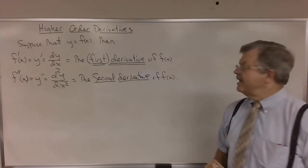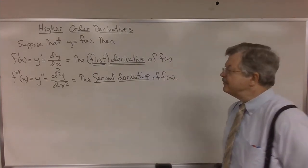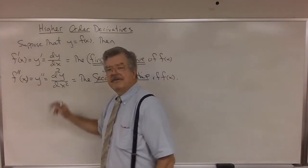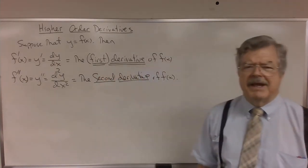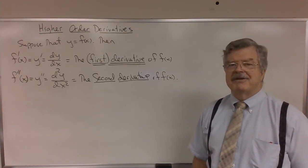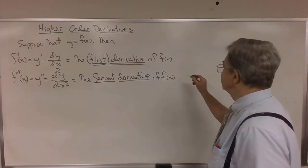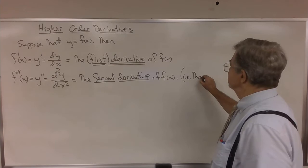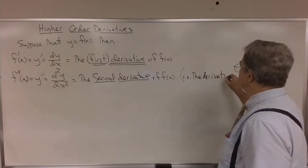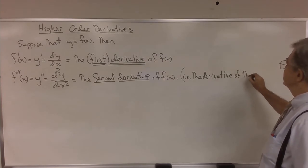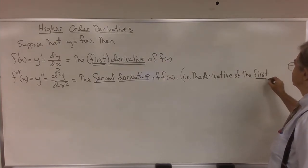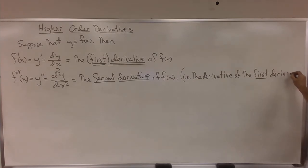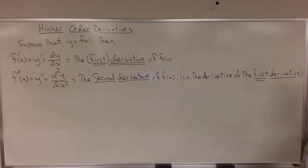And if you think about it, all I've told you so far is the notation for the second derivative. I haven't told you what it is, so maybe it's about time I should. To get the second derivative, we compute the derivative of the first derivative, f prime of x. So the second derivative is the derivative of the first derivative.